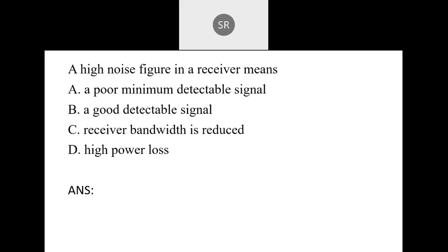Next: A high noise figure in a receiver means: A — poor minimum detectable signal; B — good detectable signal; C — receiver bandwidth is reduced; D — high power loss. A high noise figure degrades receiver performance, leading to a poor minimum detectable signal. The correct answer is A.